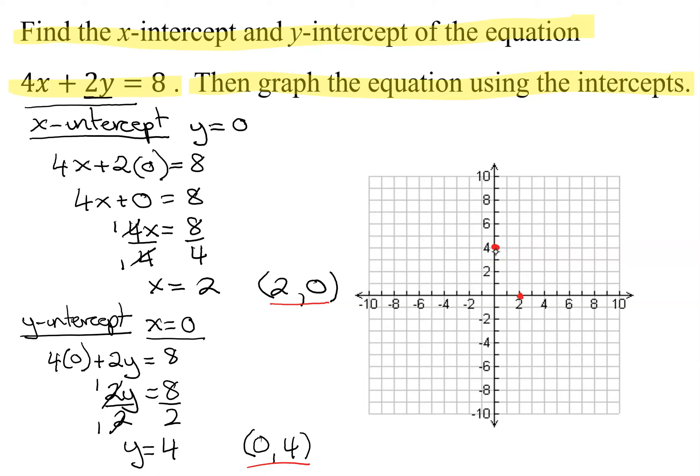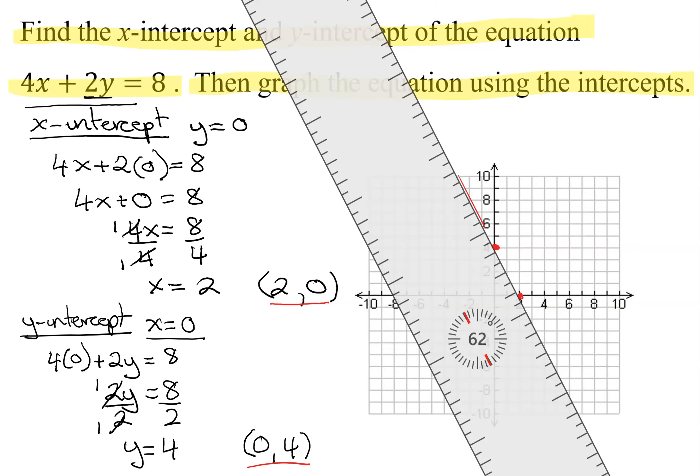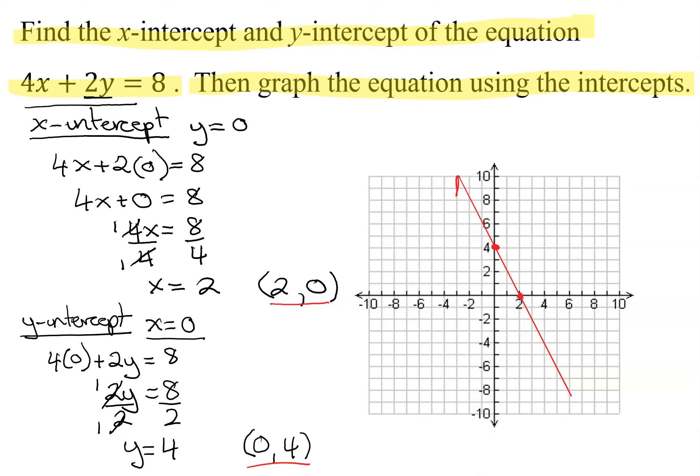So there are my two points on the graph. And I'm going to put it on pause while I try and draw my line. Okay, so hopefully there is my line, and I put arrows on either end.